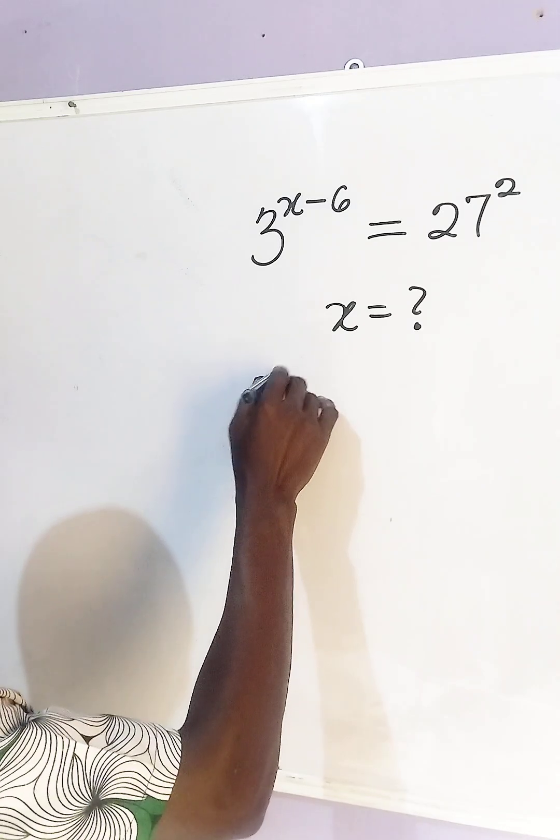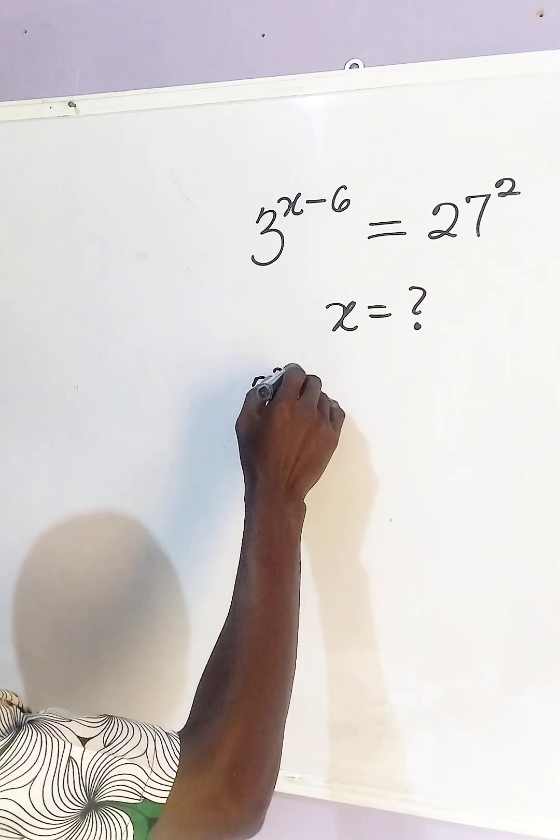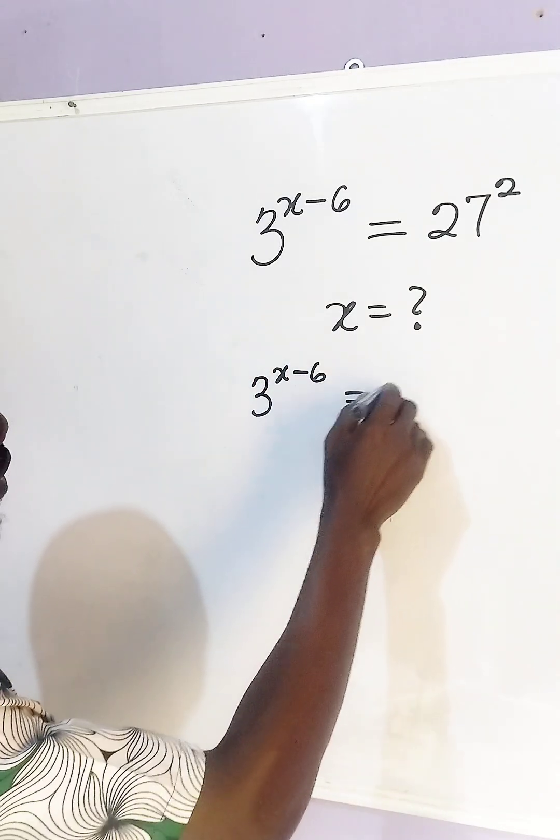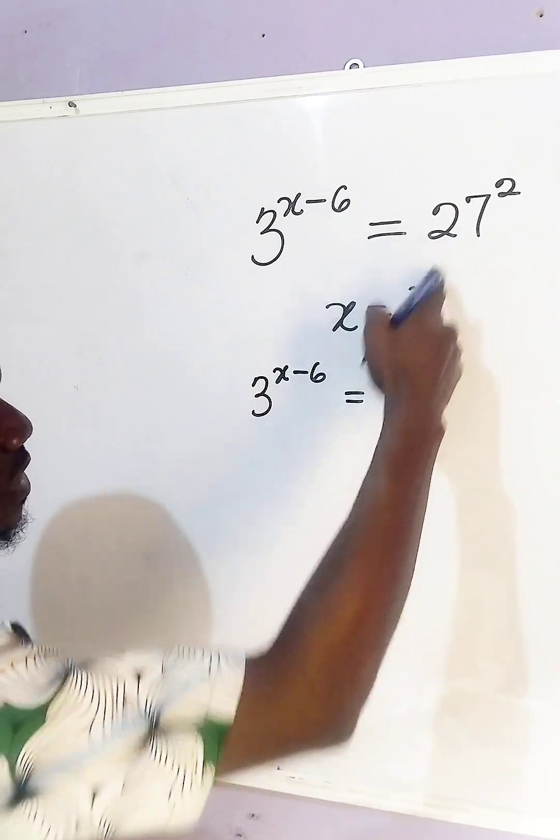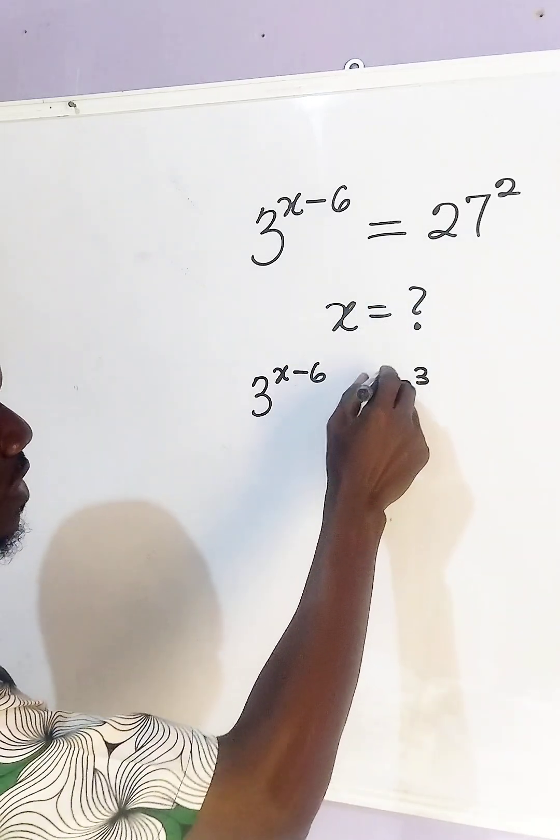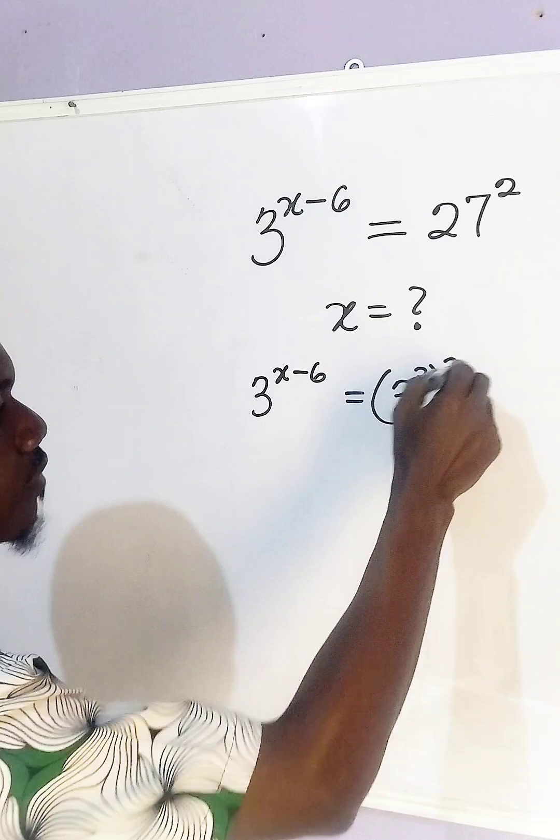So from the left hand side we have 3 raised to the power of x minus 6, then equals to 3 raised to the power of 3, because 27 is 3 raised to the power of 3, and you have 2.